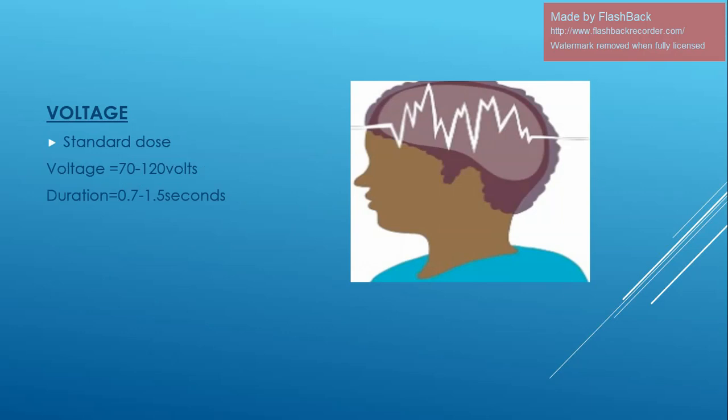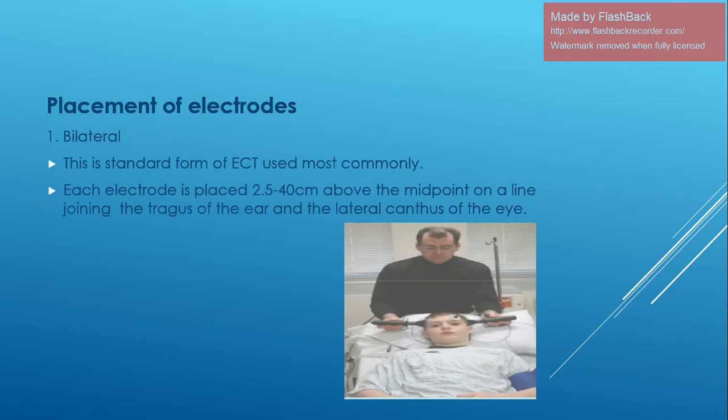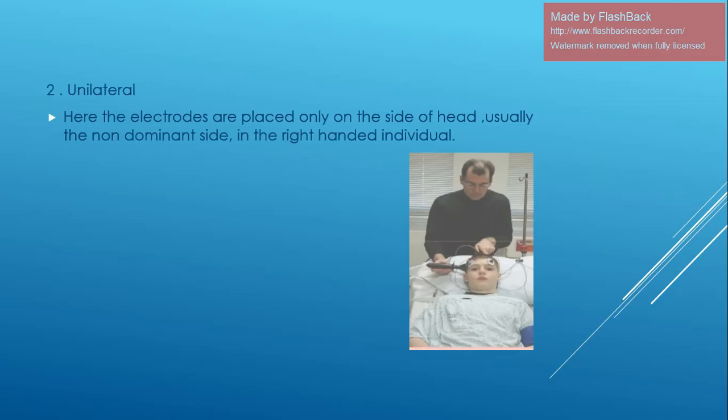The standard voltage used is 70 to 120 volts and duration is 0.7 to 1.5 seconds. Regarding electrode placement — bilateral is the standard form of ECT used most commonly; each electrode is placed 2.5 cm to 4 cm above the midpoint on a line joining the tragus of the ear and the lateral canthus of the eye. For unilateral ECT, electrodes are placed only on one side of the head, usually the non-dominant side in right-handed individuals.